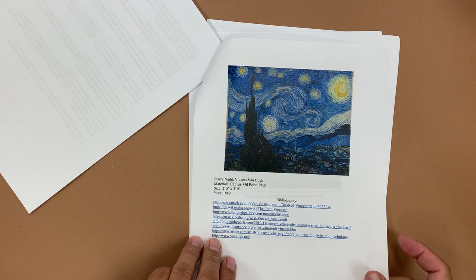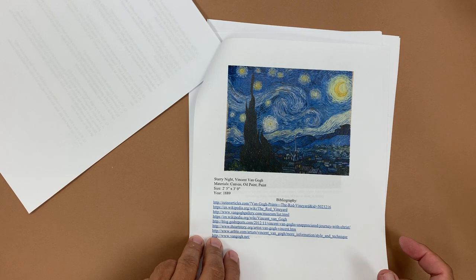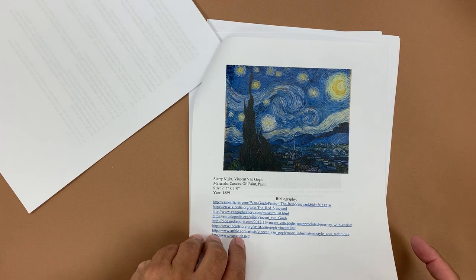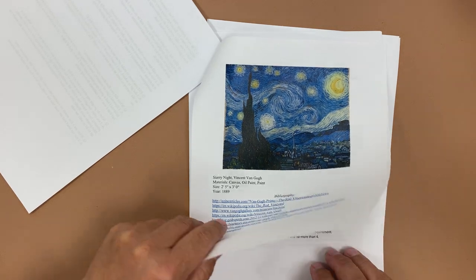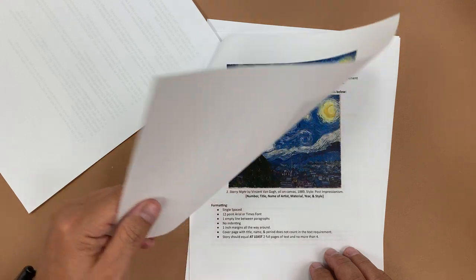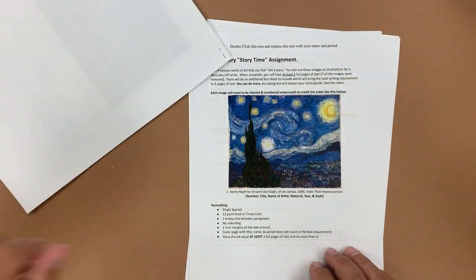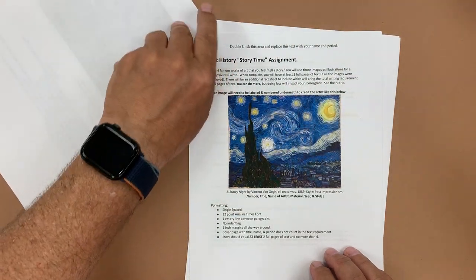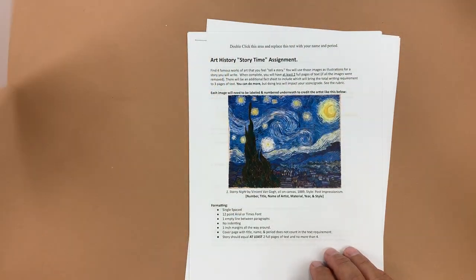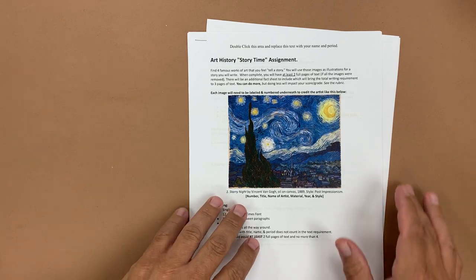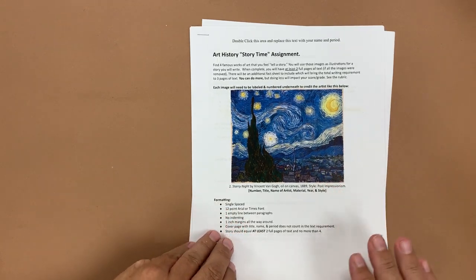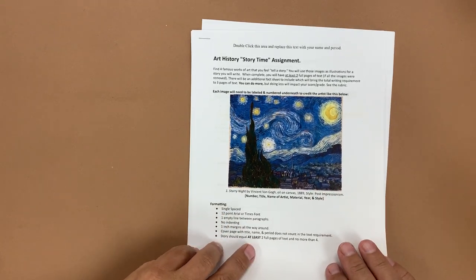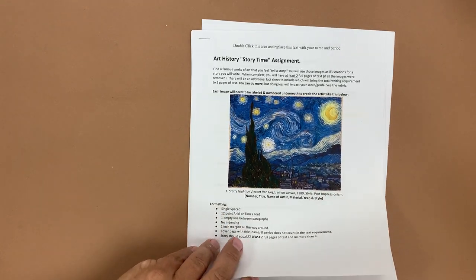When I do this in Google Documents it'll do an originality check, which covers us for plagiarism. The second assignment I do, which is really fun for students who get into creative writing, is 'Art History Story Time.'